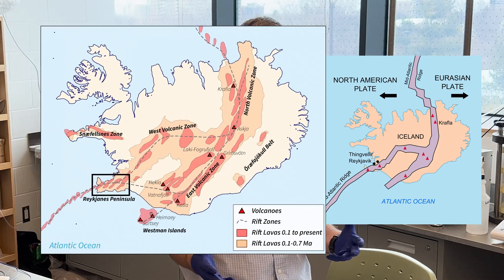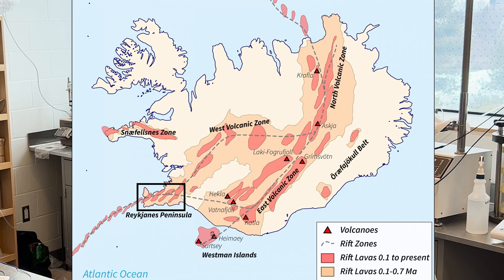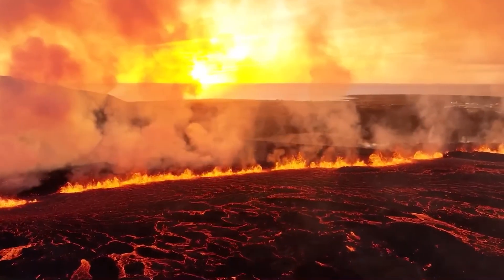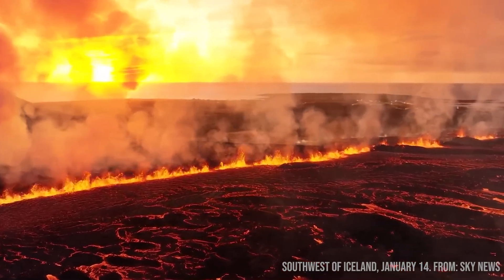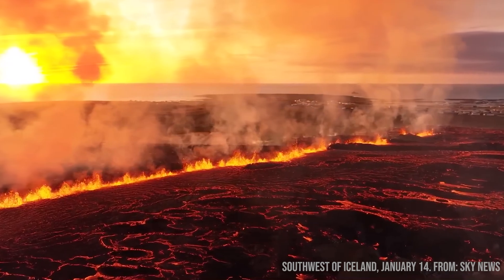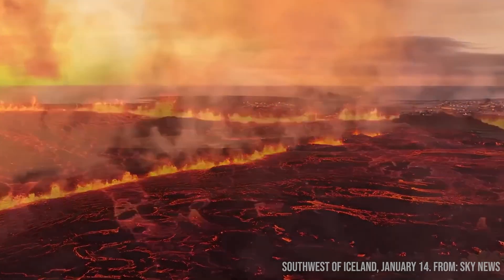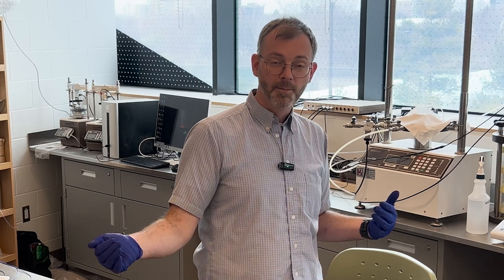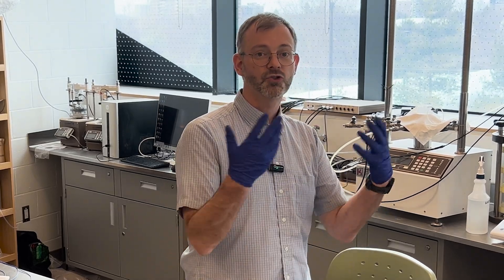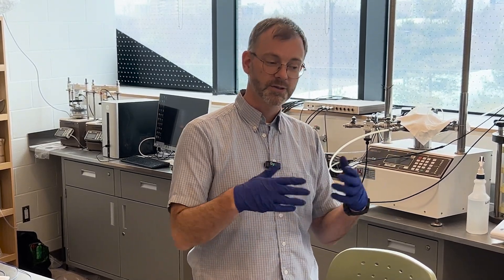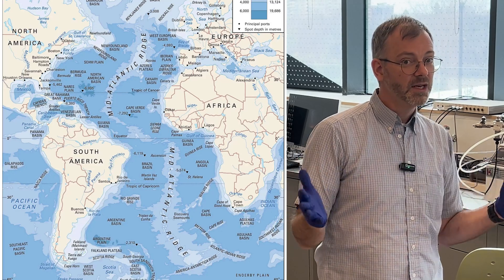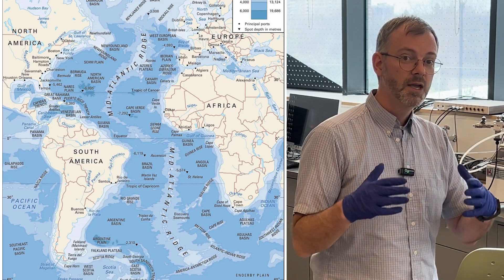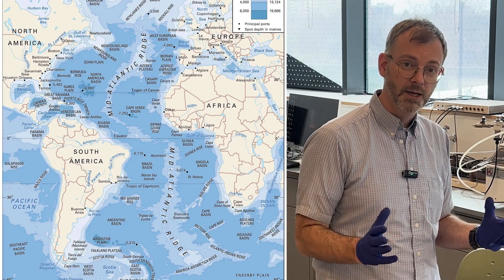The volcanic eruptions are happening along these long fissures, and those fissures are openings down into the magma source along what we would call, as a geologist, dikes that are forming underground. That's the area where the magma flows underground and then extrudes up to the surface and spreads out. What's happening in the mid-Atlantic ridge is similar to what we see in the Reykjanes Peninsula in Iceland.